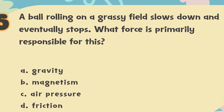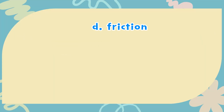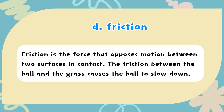The correct answer is D: Friction. Friction is the force that opposes motion between two surfaces in contact. The friction between the ball and the grass causes the ball to slow down.